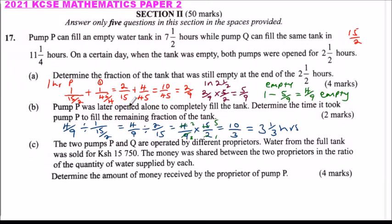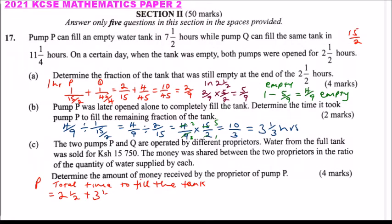Coming back to the solution, the total time to fill the tank is 2 and a half hours, when both P and Q ran, plus 3 and a third hours when P ran alone. Adding these fractions together gives 5 and 5 over 6 hours total.